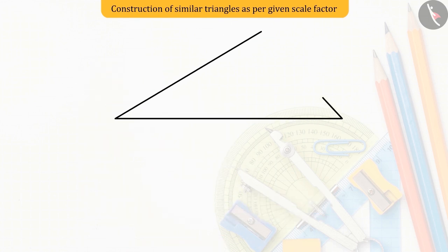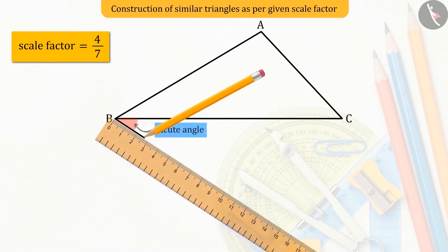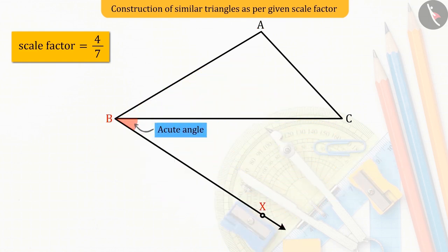Let us construct a triangle similar to the given triangle ABC whose sides are in the ratio 4 is to 7, that is, the scale factor is 4 upon 7. Let's first draw a ray BX forming an acute angle from the base BC of the triangle such that it is opposite to the vertex A.